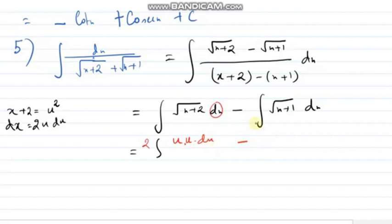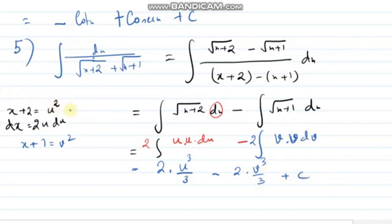So, u square du minus, same thing, same concept if I apply here. Do agree, this will be v and this 2 is coming outside, this will be v dv. If I take x plus 1 as v square, so what will be integration of u square? That will be u cube divided by 3 minus 2 into v cube divided by 3 plus c. My u was equals to x plus 2 whole to the power half, right?